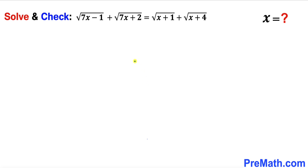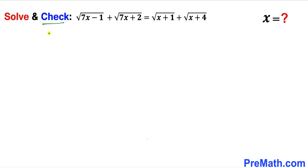Welcome to pre-math. In this video we have got this radical equation: square root of (7x minus 1) plus square root of (7x plus 2) equals square root of (x plus 1) plus square root of (x plus 4). We are going to solve this equation for x values and finally check the solution for any extraneous solutions.